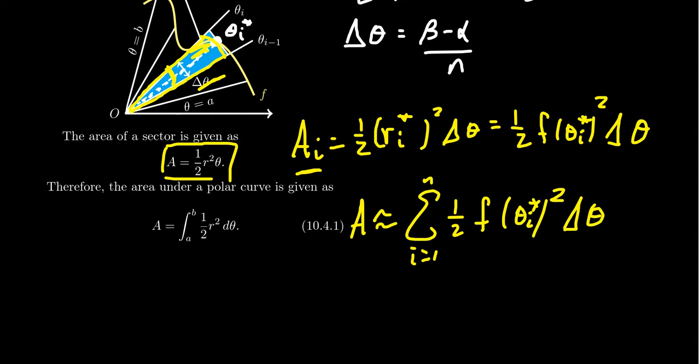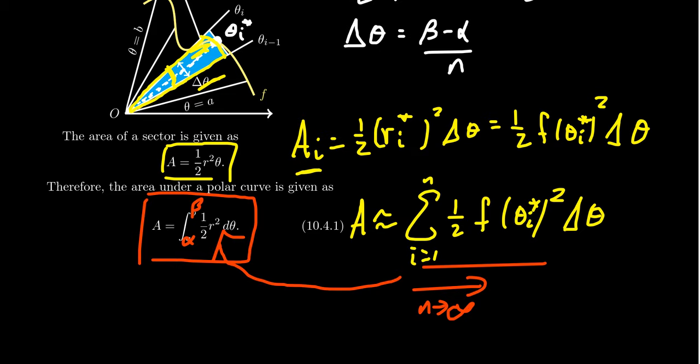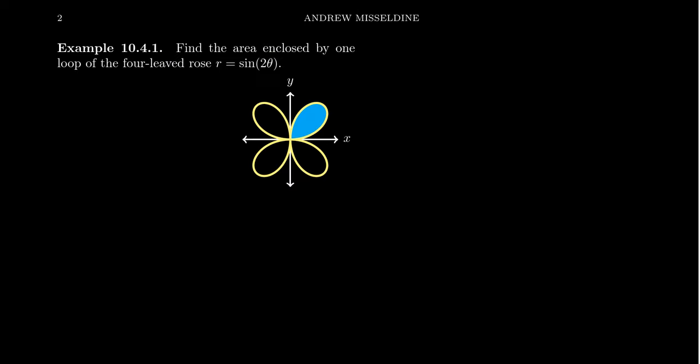Then as we take the limit as n goes to infinity, this Riemann sum will turn into an integral where we go from alpha to beta. We integrate from alpha to beta one half r^2 d theta. So area under a polar curve is a little bit different. For Cartesian under the curve, we get y times dx - length times width of a rectangle. We're using sectors here, so we get one half r^2 d theta. With that adjustment, we can calculate the area under a curve very nicely.